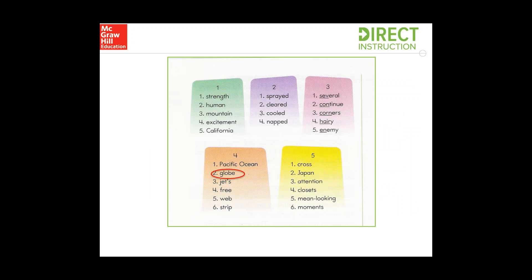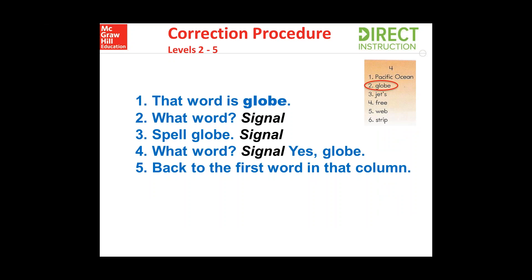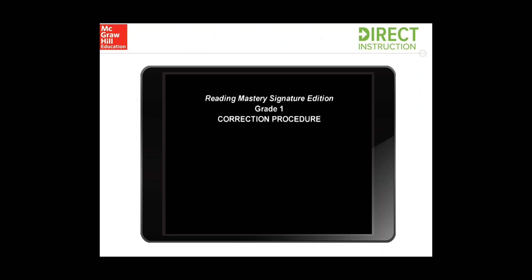The same rule applies if you're in the textbook in the upper grades. For example, if students are reading columns of words and make a mistake on 'globe' in column four, you go through the same correction procedure. In this case, step three has them spell the word — a specific correction procedure used in certain aspects of levels two through five. In levels K and 1, it may ask you to sound it out. If you're not sure what specific correction procedure to use, refer to your teacher's guide for a great explanation of both the general and specific procedures. Step five is the delayed test, going back to the first word in that column.